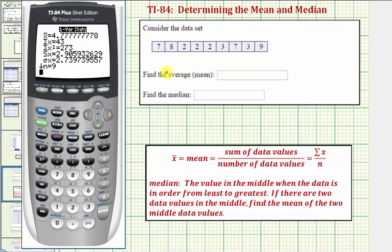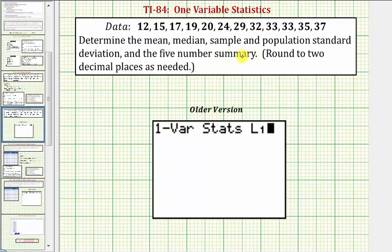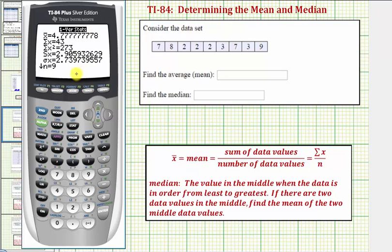Before we find the mean and median, I want to show a screenshot of the older version of the 84 or the 83. On the older 84 or 83, once you select one-var stats, it shows on the home screen. If the data set is in L1, this L1 here is optional—you can just press ENTER. But if the data was not in L1, we'd have to indicate the location of the data by entering the correct list. Once we press ENTER, the screen would look like this, just like the newer version.